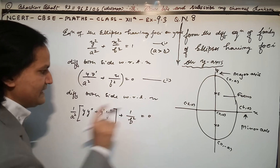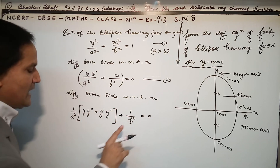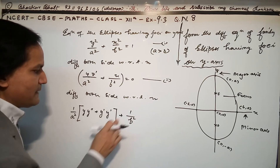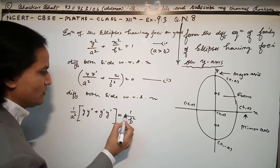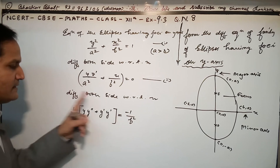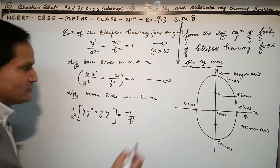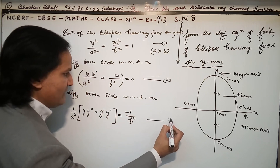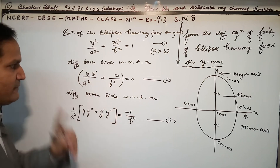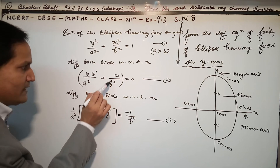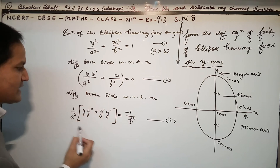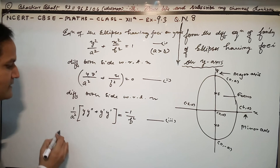Taking 1/b² to the other side, we get the expression equal to minus 1/b². This gives us equation 3. Now we take the value obtained in equation 3 and substitute it in place of 1/b² in equation 2.